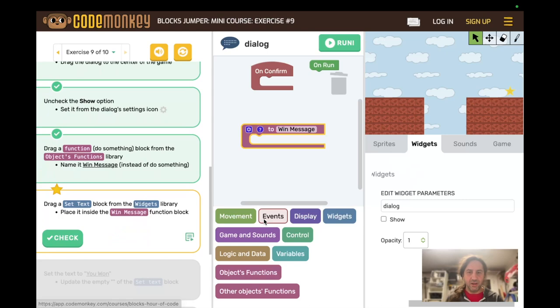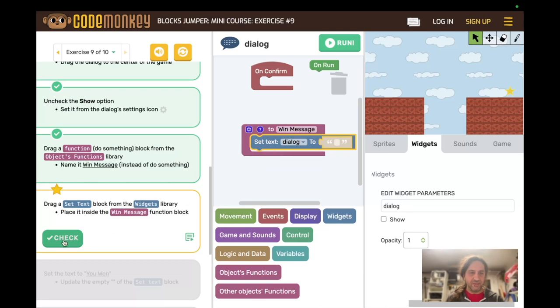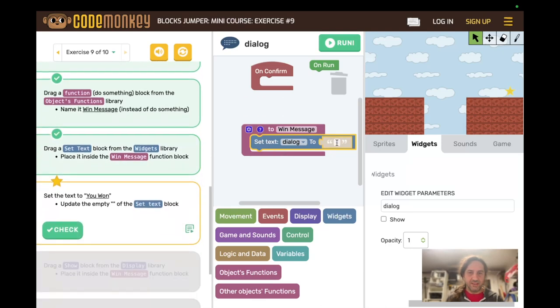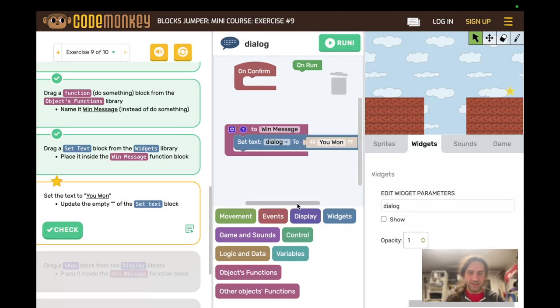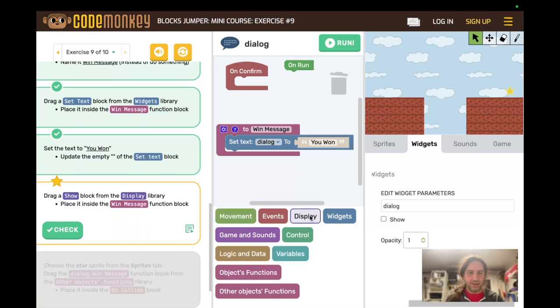And then set text from the widgets library. So we need to get back to, oh, the widgets library. That's another thing. Widgets library, widgets tab. We want widgets library, set text in the win message and set the text to you want. So you type in the little empty spot and change it to you one. Then you want the capitalization and spacing to be exactly the same.